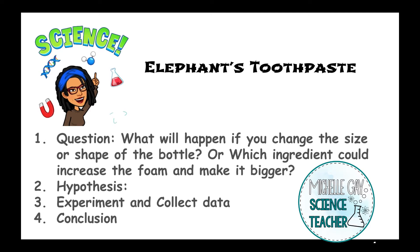Once you do your hypothesis, gather your materials. Remember safety — have safety goggles and you might want to wear gloves. Conduct your experiment, and while you're conducting it, collect your data and write it in your science journal. Then come up with a conclusion based on your hypothesis, and let me know what happened based on the question that you selected.